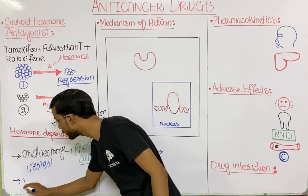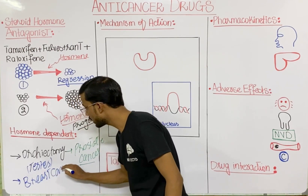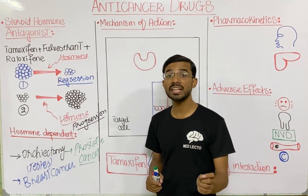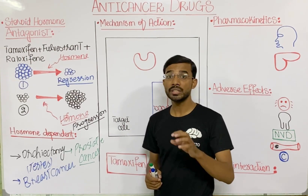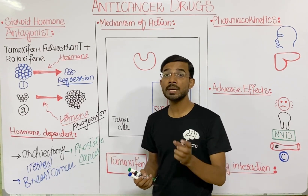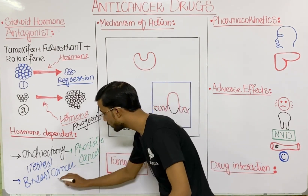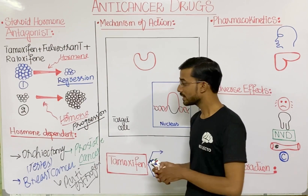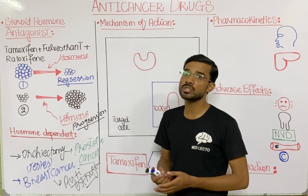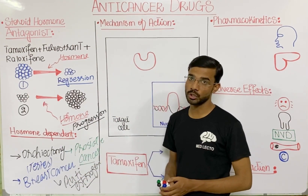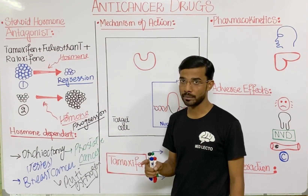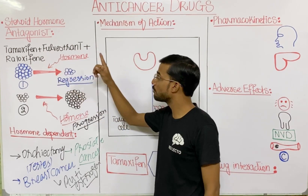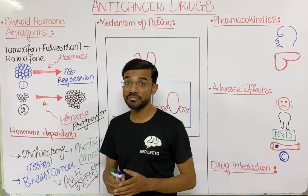A second example is breast cancer, where we use anti-estrogen therapy. Estrogen hormone gives a stimulus to breast cancer, so if we give anti-estrogen therapy, the estrogen will not work properly in the progression of the breast cancer. The three most important anti-estrogen drugs are Tamoxifen, Fulvestrant, and Raloxifene — these are the estrogen antagonists.